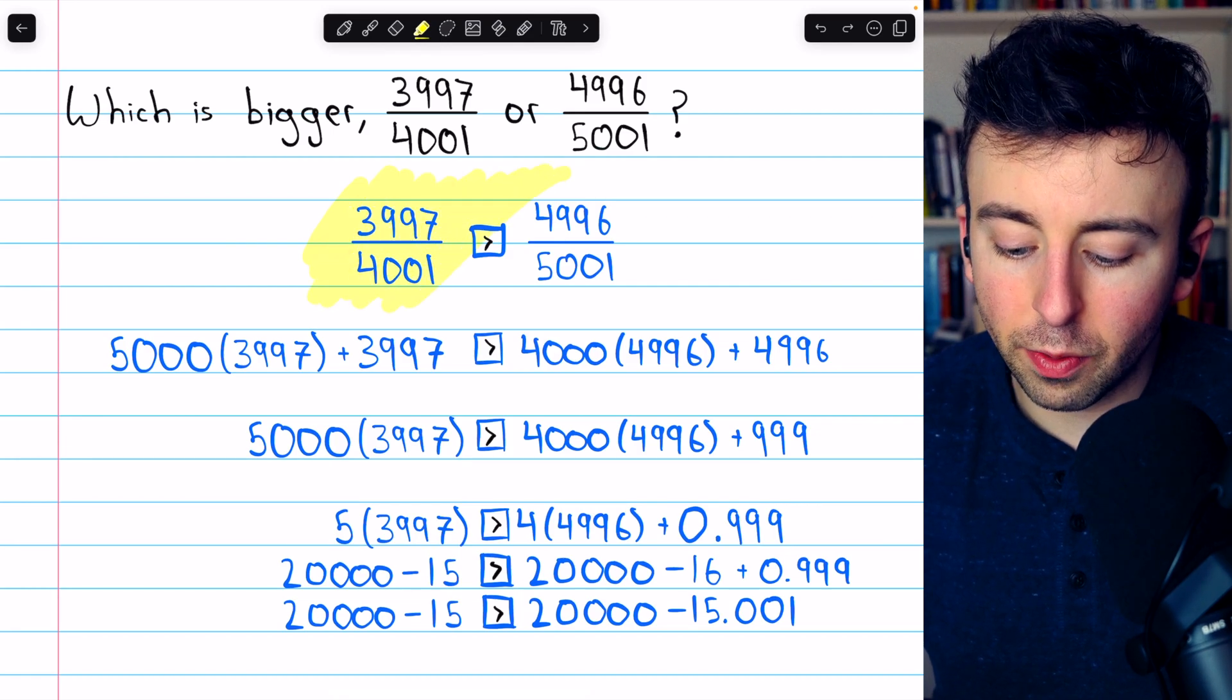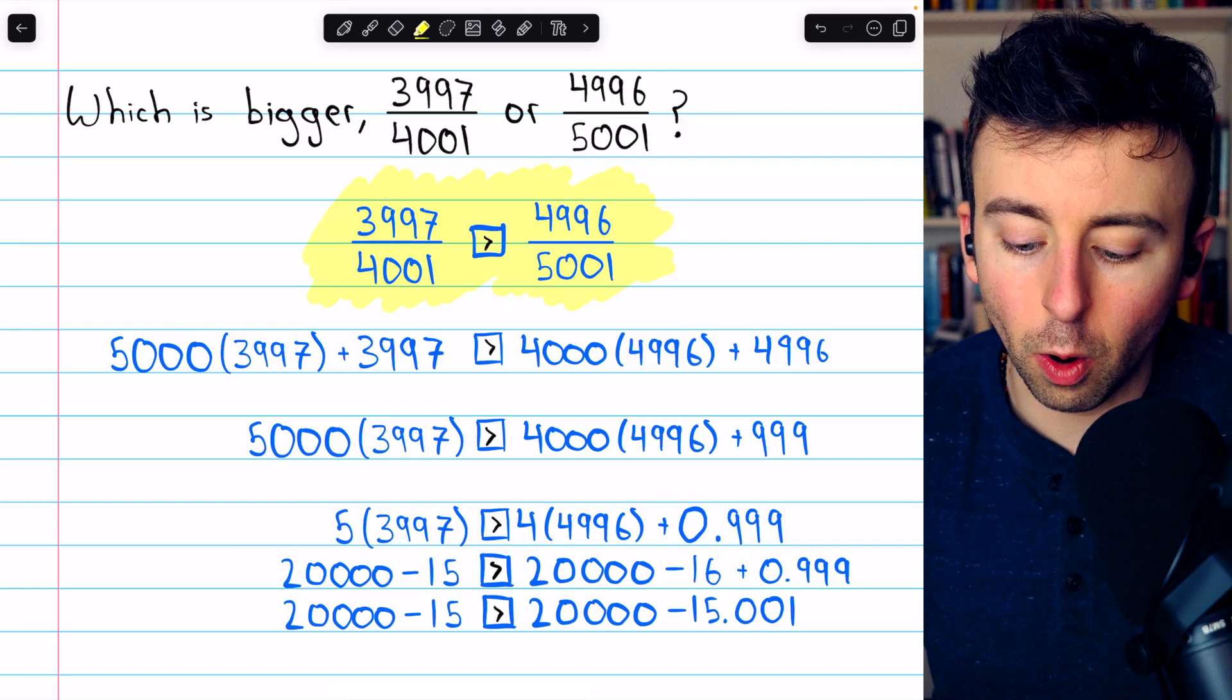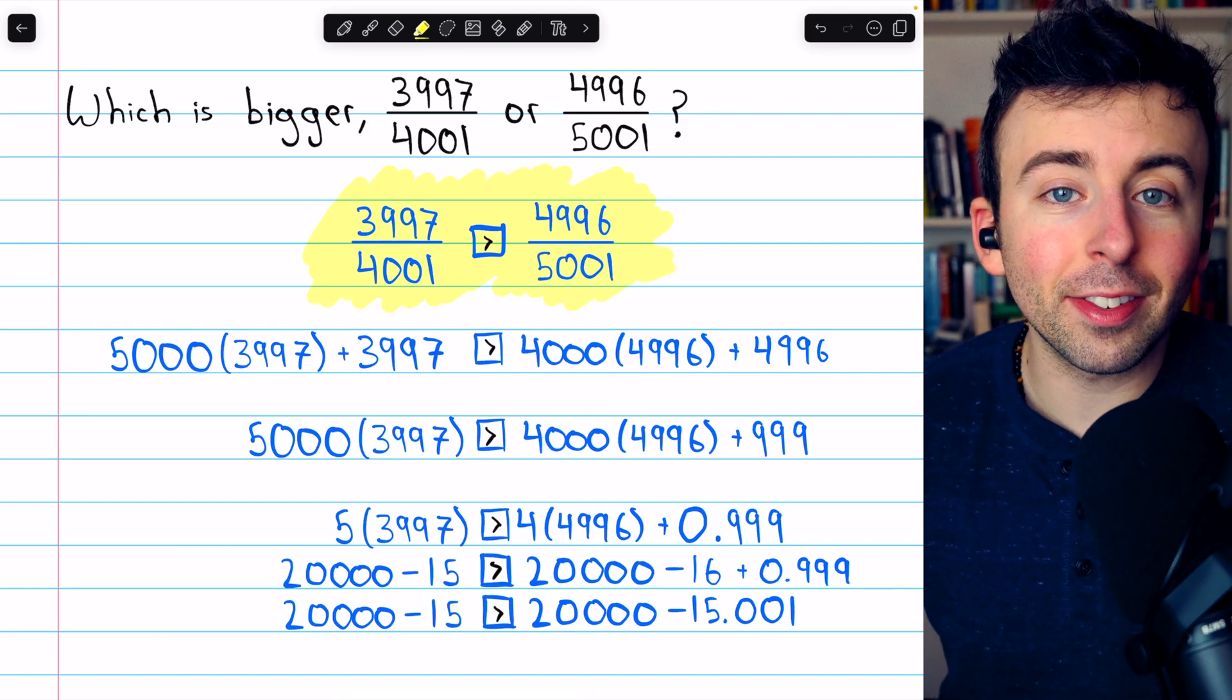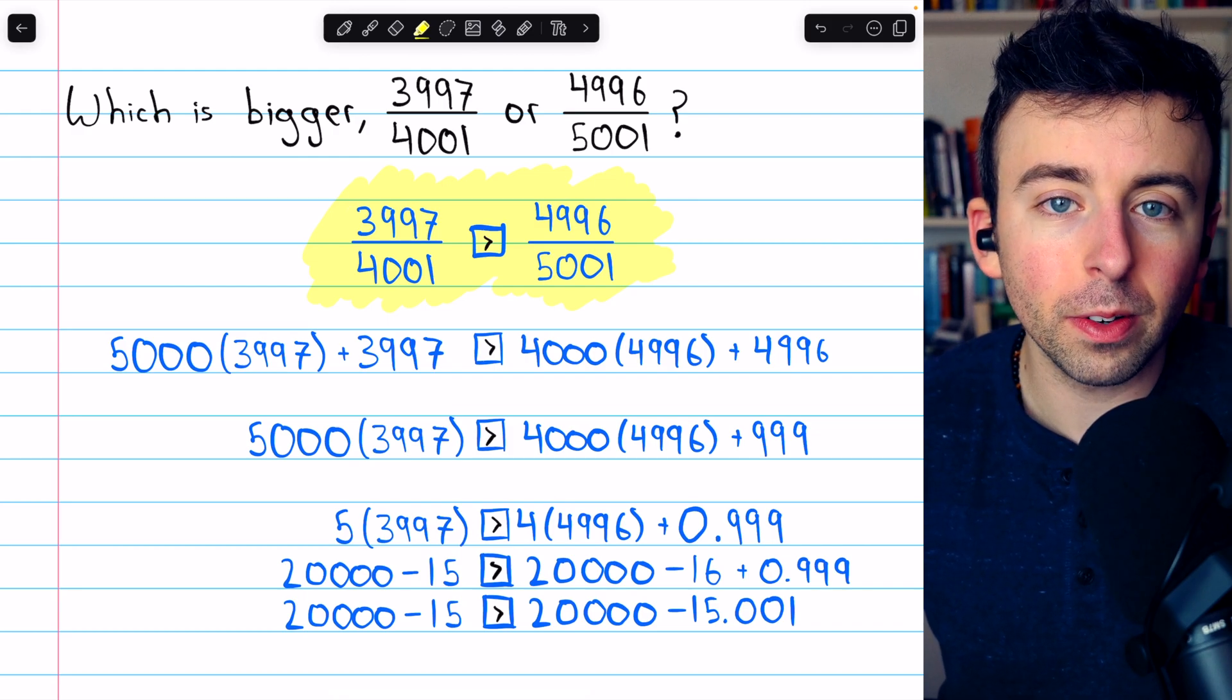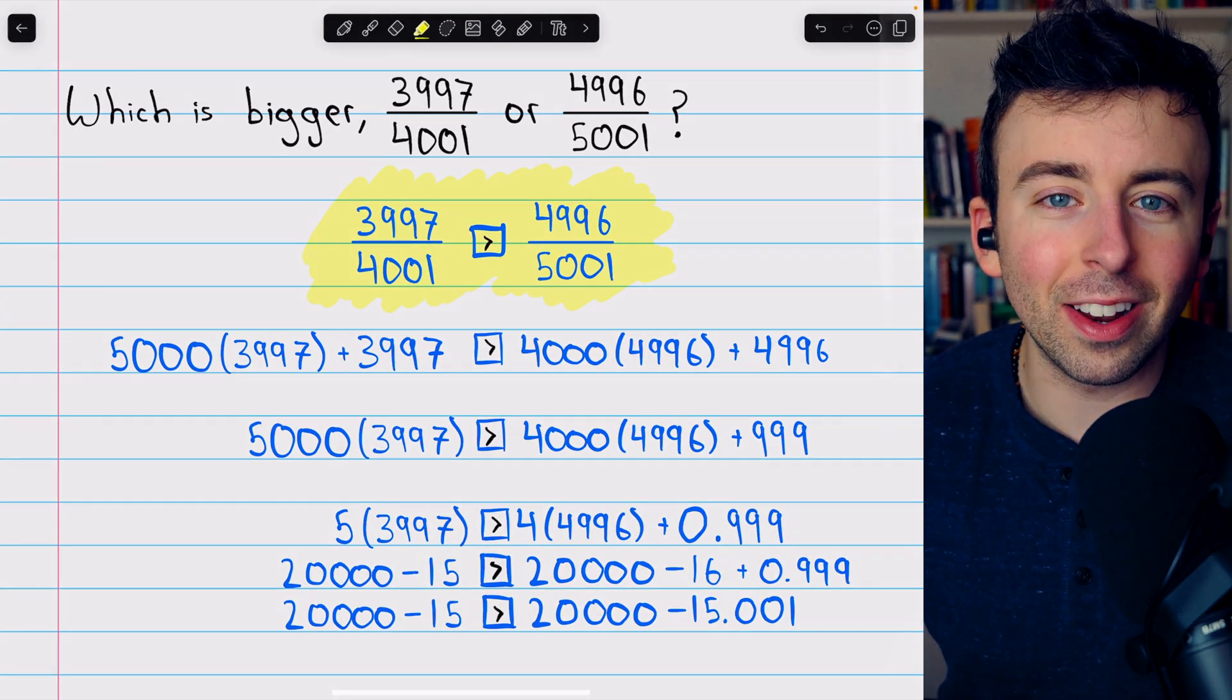3,997 over 4,001 is greater than 4,996 over 5,001. Let me know in the comments if you have any questions or have a solution of your own. And check the description for a link to my playlist with more interesting math problems. Thanks for watching.